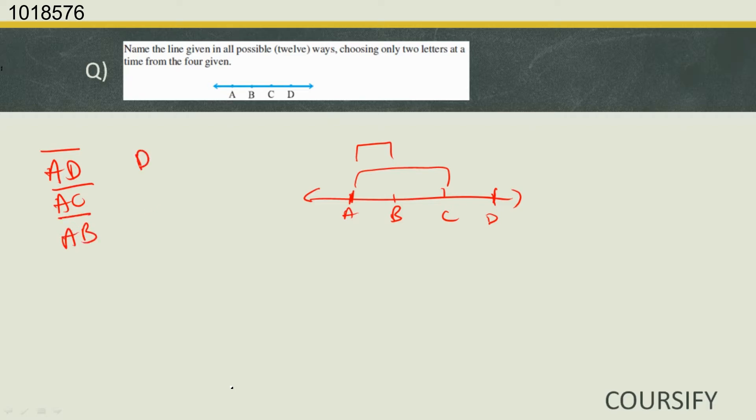Then we have the reverse of this, that is line DA, line CA, and line BA.